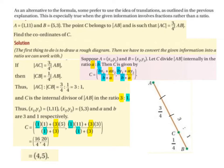So it's easier to see it when you draw it out in a diagram. And C is the internal divisor of AB in the ratio of 3 to 1. Thus, (x1, y1) is equal to (1, 11), that's the point A. And (x2, y2) is equal to (5, 3), that's the point B. And a and b are 3 and 1 respectively. So it has to be 3 and 1, not 1 and 3.